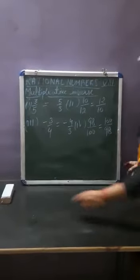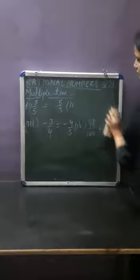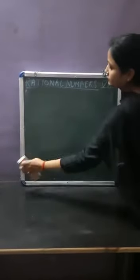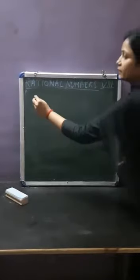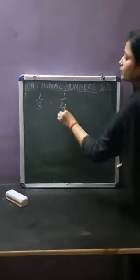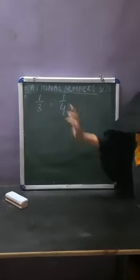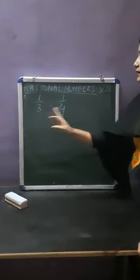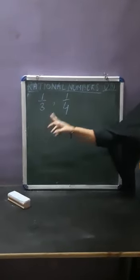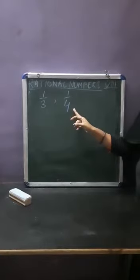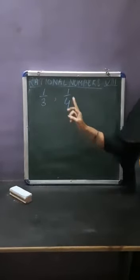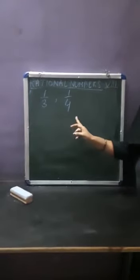Now, next concept. If you have two rational numbers, like 1 upon 3 and 1 upon 4, and you have to find out — both are rational numbers, we can write them in the form of A upon B. You have to find out one rational number between them.